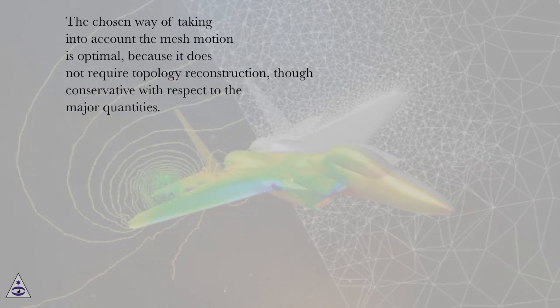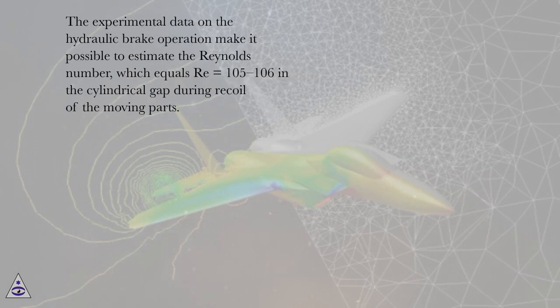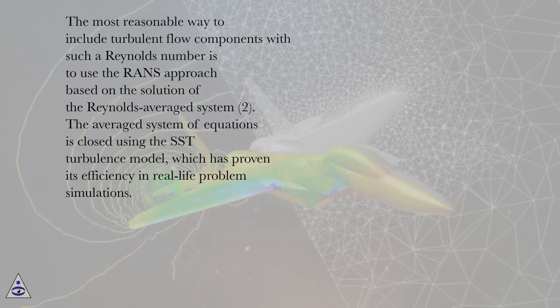This form of the equations is easy to implement within the framework of finite volume discretization. The chosen way of taking into account the mesh motion is optimal, because it does not require topology reconstruction, though conservative with respect to the major quantities. The experimental data on the hydraulic brake operation make it possible to estimate the Reynolds number, which equals Re = 10^5 to 10^6 in the cylindrical gap during recoil of the moving parts.